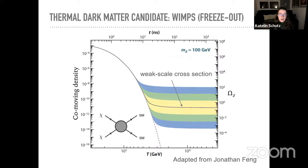This is called the WIMP miracle. It didn't have to be this way — it didn't have to be the case that putting in known scales of physics into this thermal story produces the observed amount of dark matter.